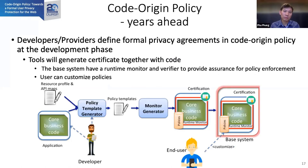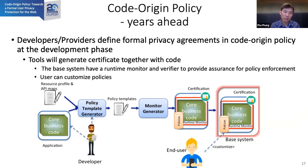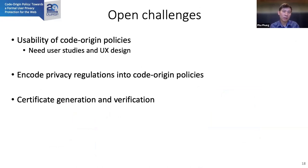In the long-term vision, we can have Code Origin Policy with a formal privacy agreement — not just a text, but a formal definition at the development phase. We develop tools to ensure that a certificate is generated and verified at runtime. There are many challenges: what type of policies are useful requires user studies; how to incorporate regulations and laws into the policy; and most challengingly, how to generate and verify the certificate to ensure formal assurance.